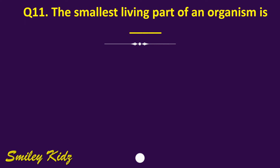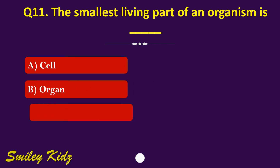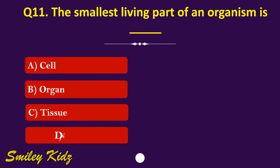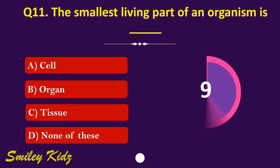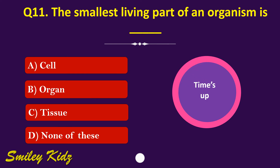Question number 11. The smallest living part of an organism is dash. The options are: A. Cell, B. Organ, C. Tissue, or D. None of these. Your time starts now. Your time is up and the right answer is option A. Cell. The smallest living part of an organism is cell.